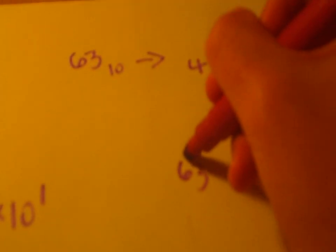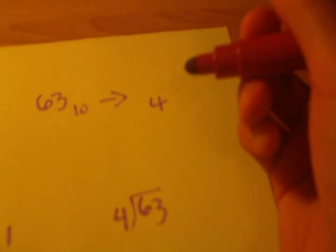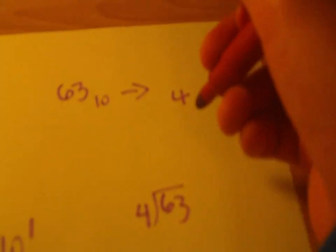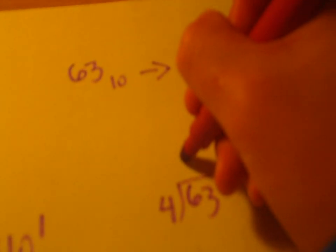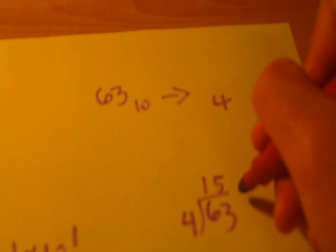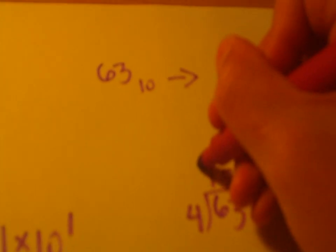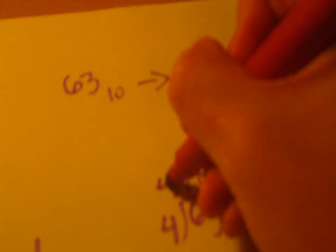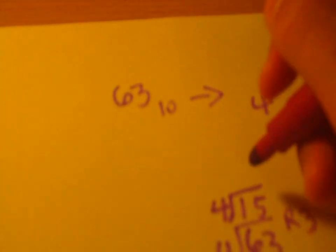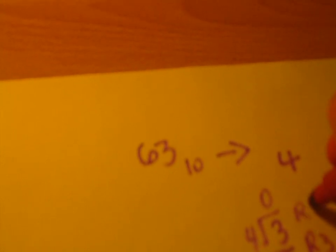and then you start dividing it by the base n that you want to convert it to. So, 63 divided by 4 is 15 with remainder 3. Make sure you have the remainders on the sides. Divide that by 4 again, you get 3, remainder 3. Divide that by 4 again, and then you get 0, remainder 3.